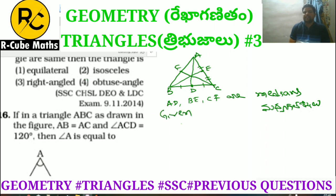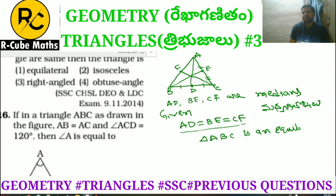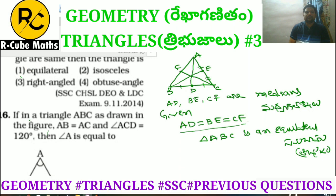Given that AD is equal to BE is equal to CF. If all three medians are equal, then triangle ABC is equilateral, because all three sides AB, BC, CA are equal. Therefore the answer is equilateral triangle.